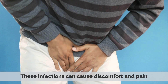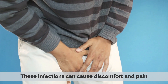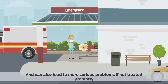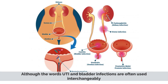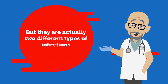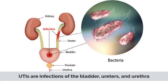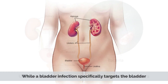These infections can cause discomfort and pain, and can also lead to more serious problems if not treated properly. Although the words UTI and bladder infections are often used interchangeably, they are actually two different types of infections. UTIs are infections of the bladder, ureters, and urethra, while a bladder infection specifically targets the bladder.